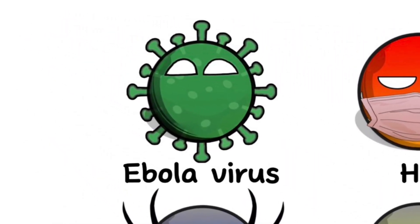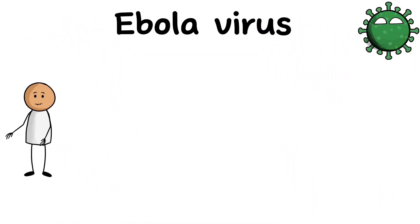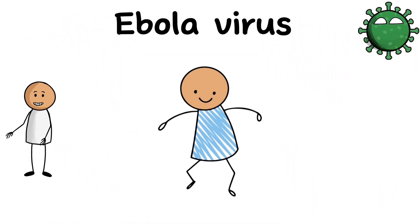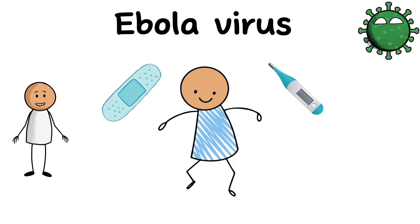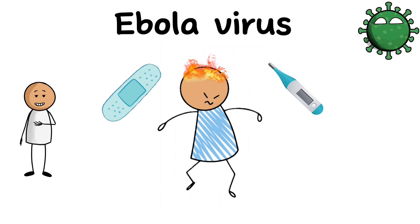Ebola virus. Ebola virus causes acute hemorrhagic fever, which is manifested by high fever, severe weakness, and symptoms associated with bleeding from various organs.